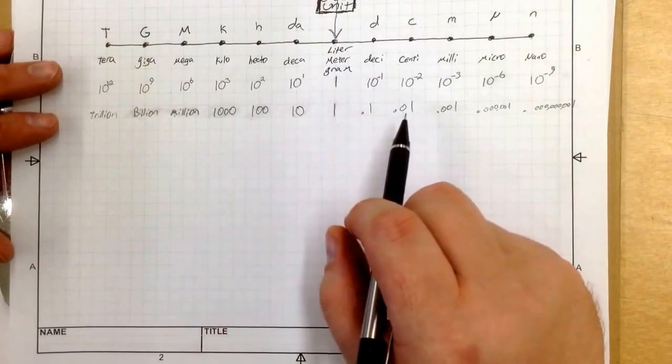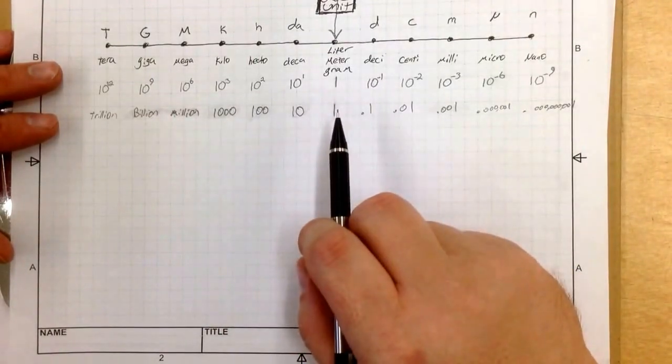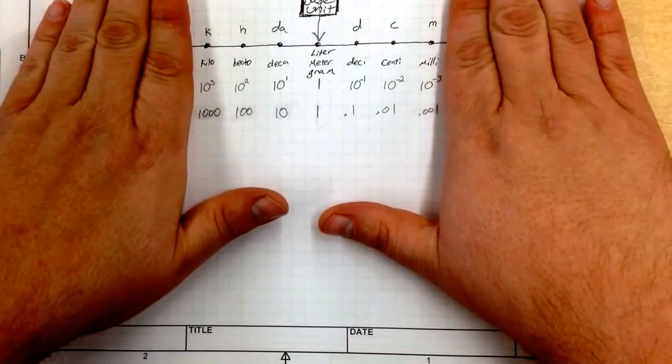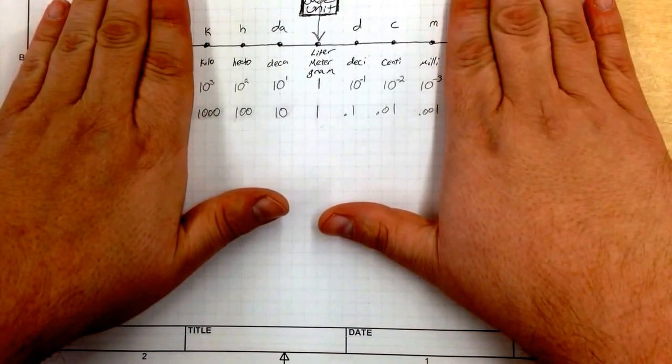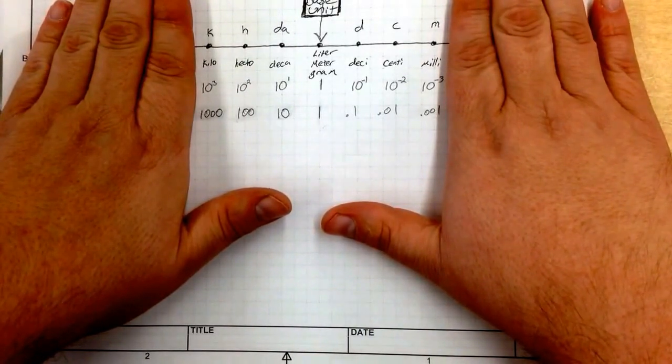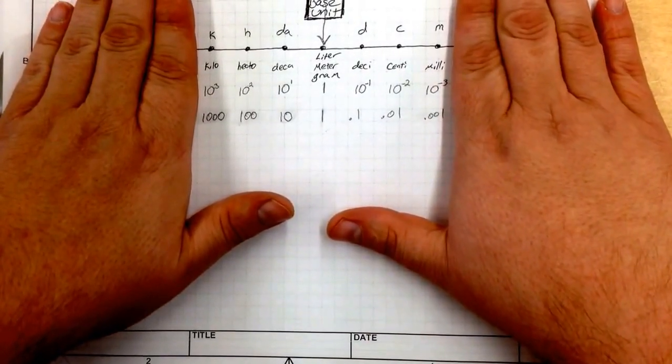Now this gets kind of confusing, and you're going to have to know this. Generally speaking, you're going to be working with this right here. Kilo, hecto, deca, base unit, deci, centi, milli. Now there's actually a really easy way to remember this.